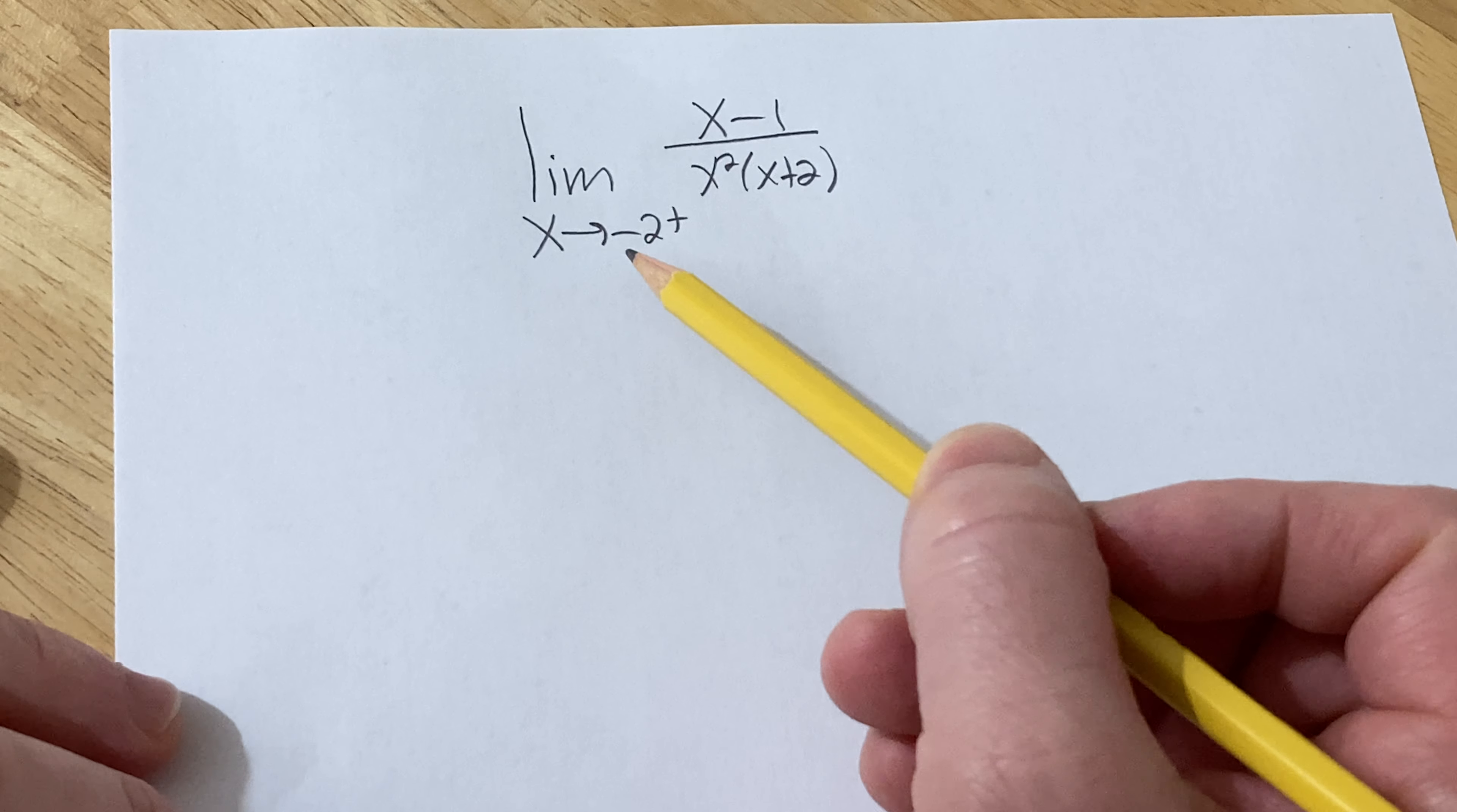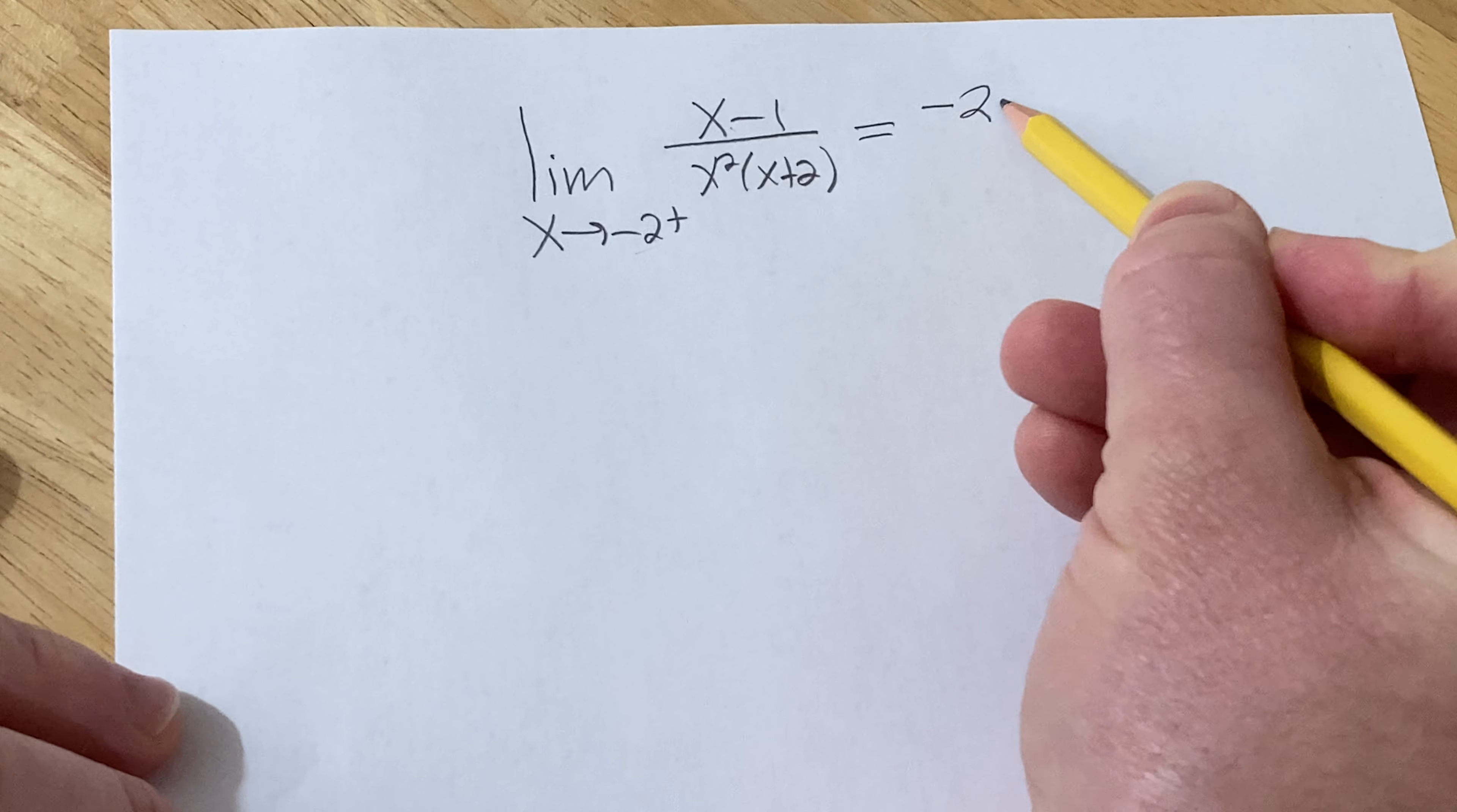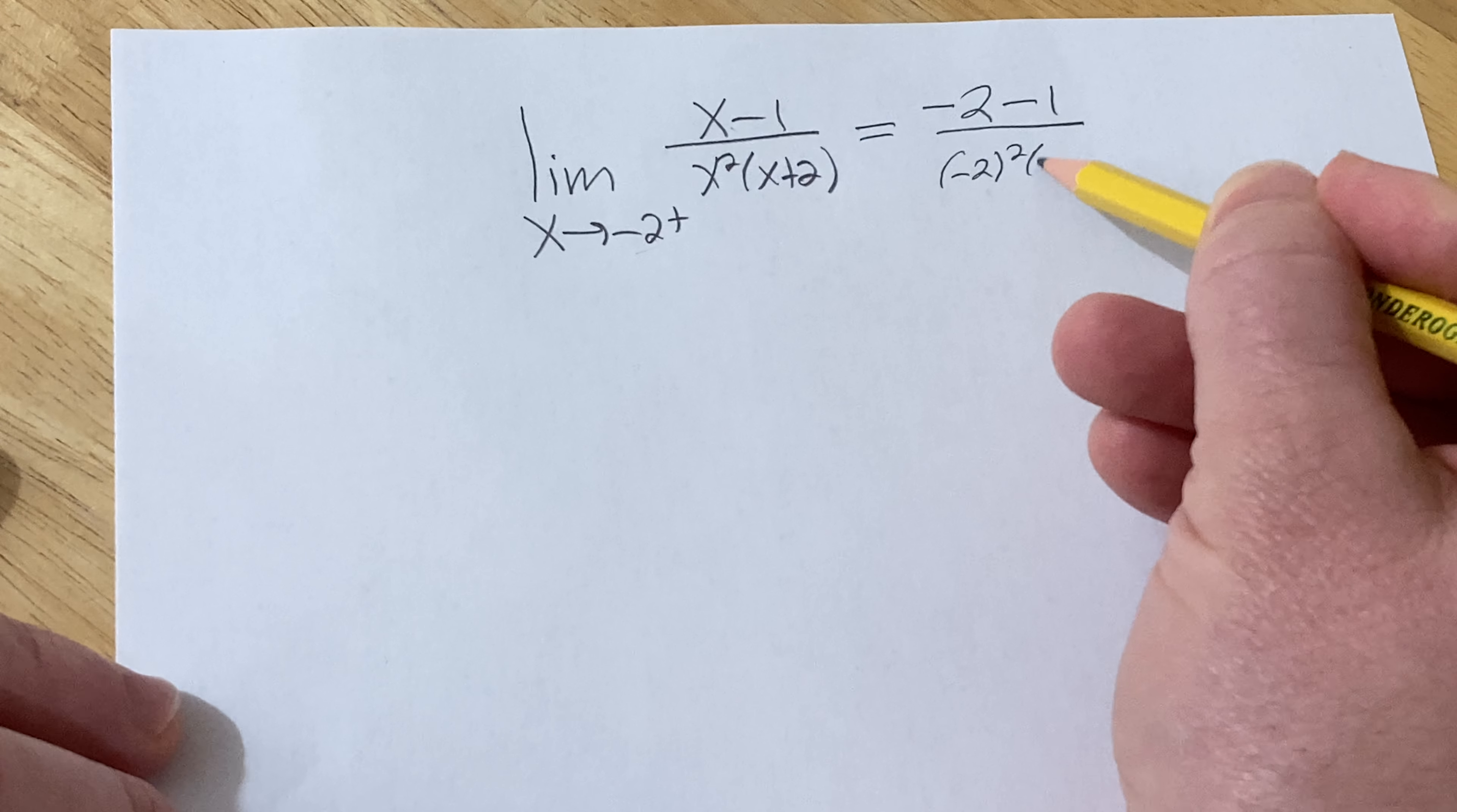The first thing you should do when trying to find a limit is take this value and plug it in for all of the values of x. If you do that, however, in this case you end up with negative 2 minus 1 over negative 2 squared and then here we get negative 2 plus 2.